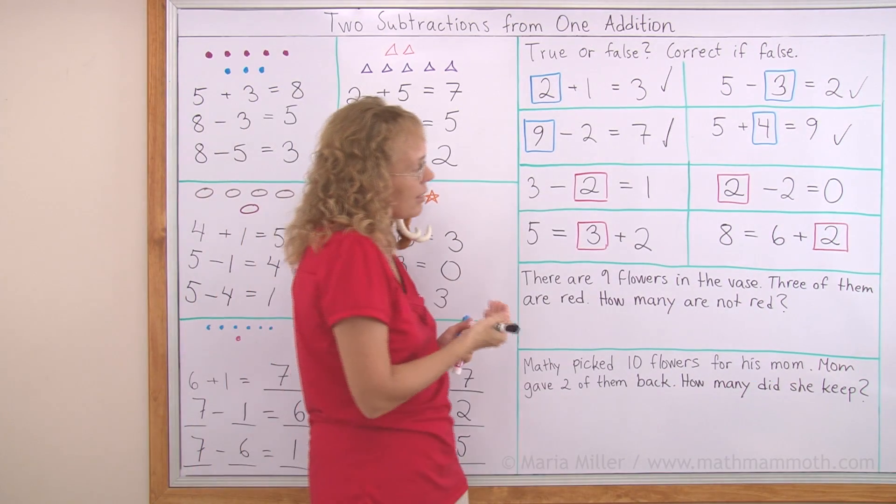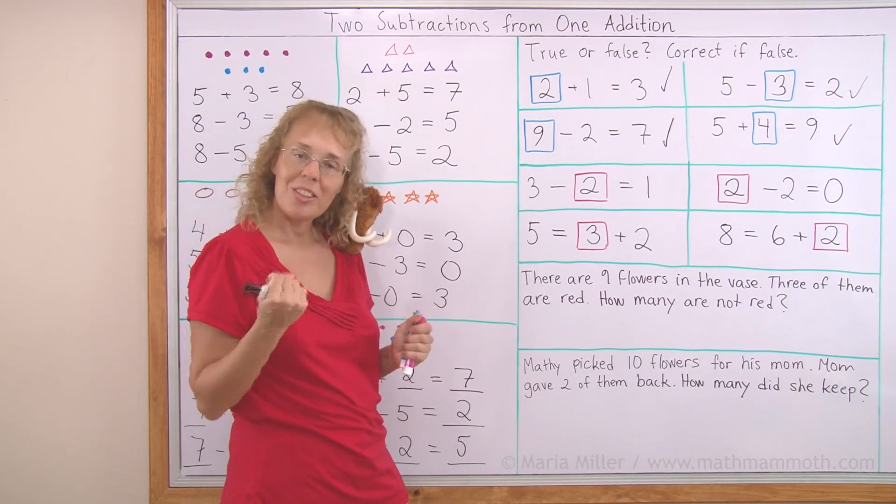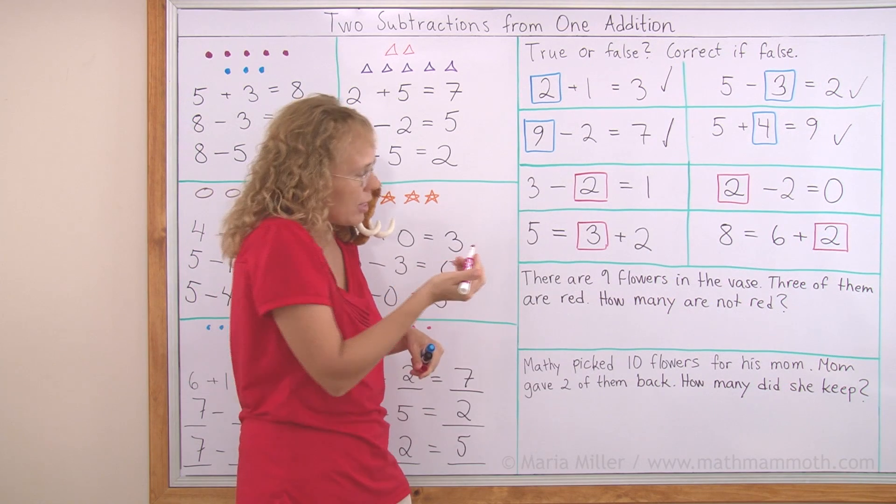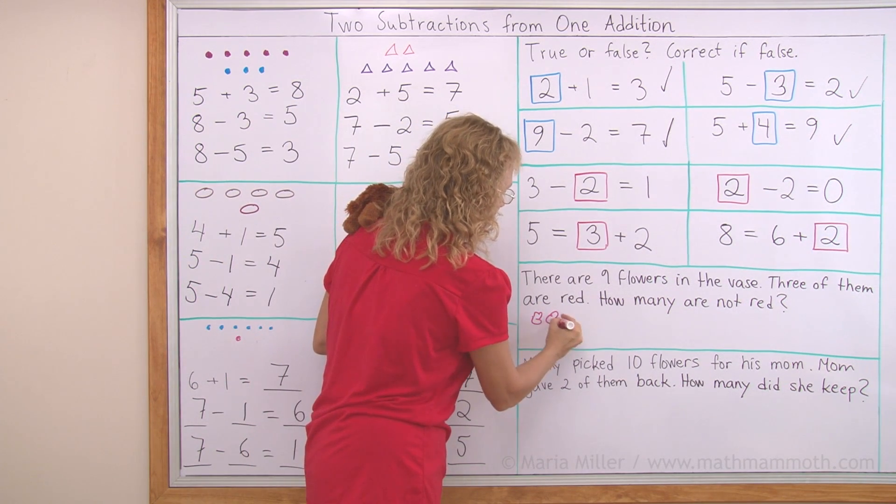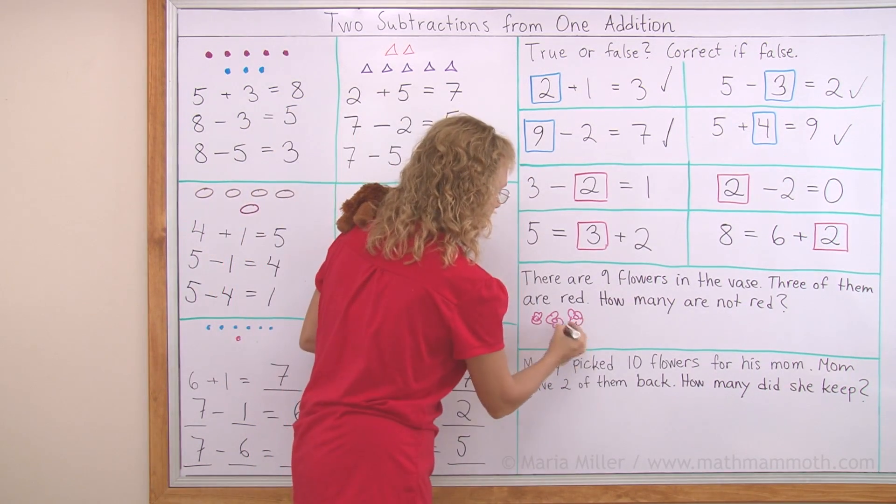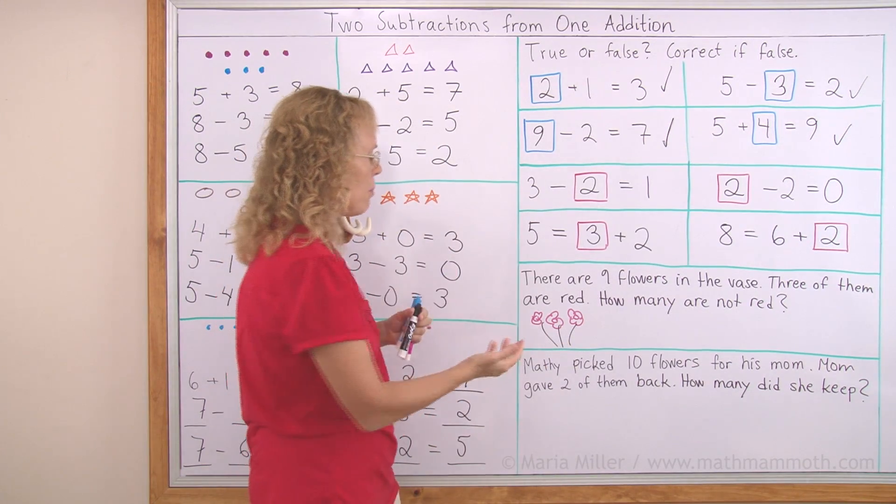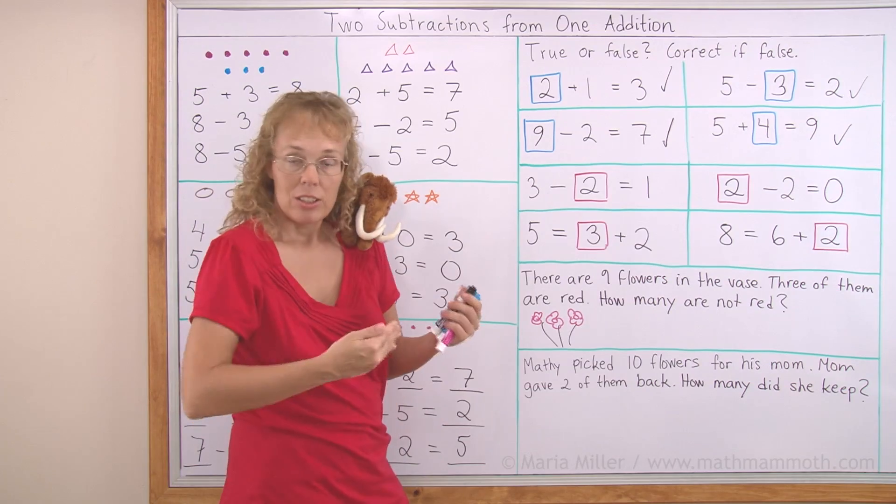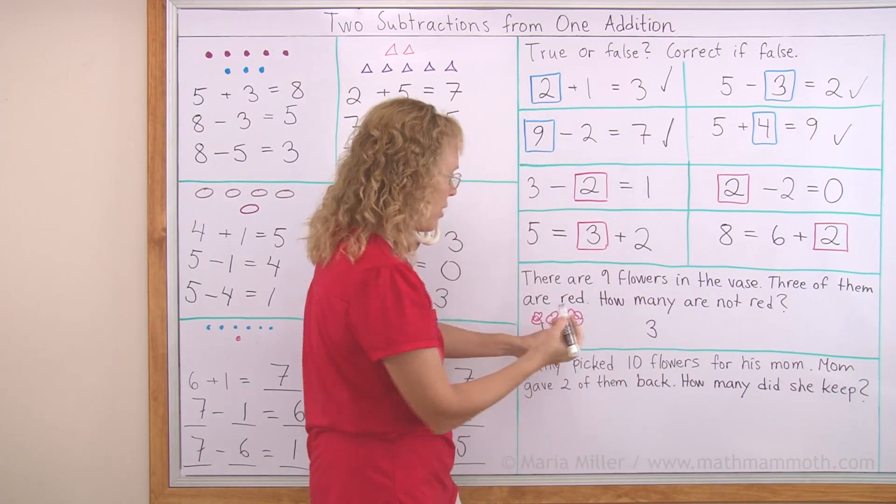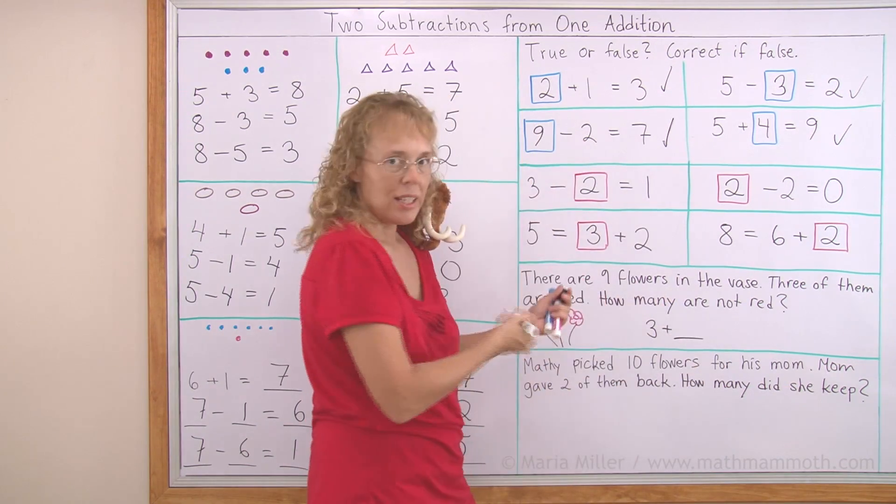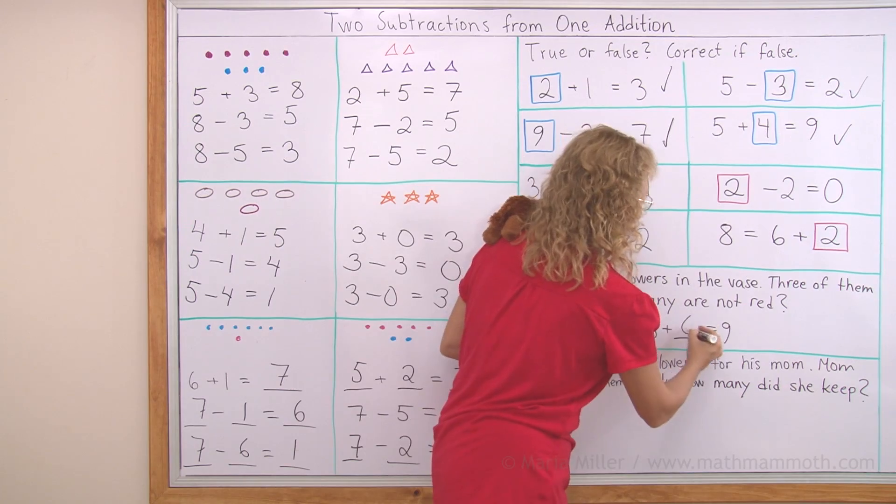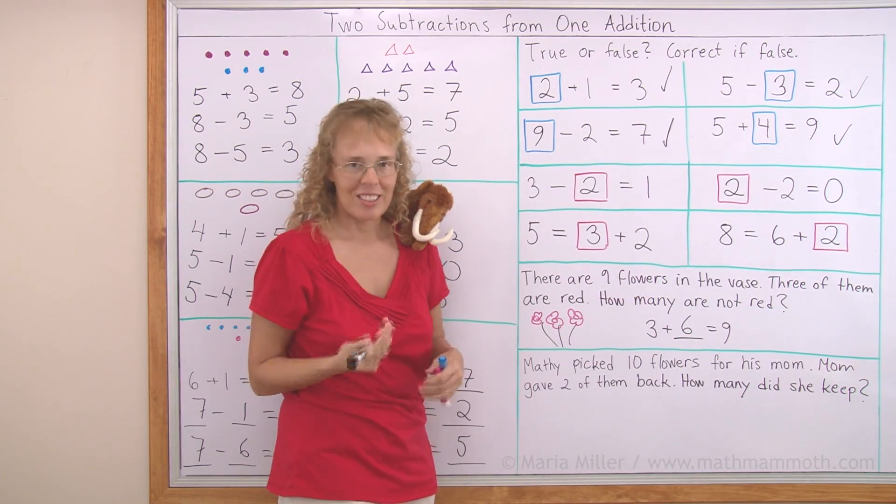There are nine flowers in the vase. Three of them are red. How many are not red? You could draw to solve this. Maybe you want to draw three red flowers. Okay, and there are nine flowers in the vase. So how many more flowers would I need to draw to get the total of nine flowers? I can think of this kind of addition here. There's three red flowers plus so many not red flowers and a total of nine. The answer is six. Good job. Six flowers are not red.